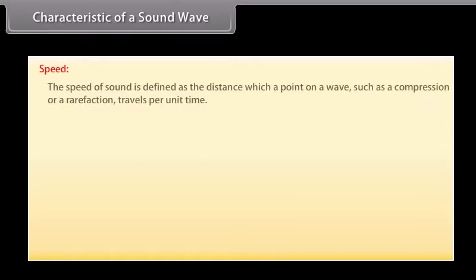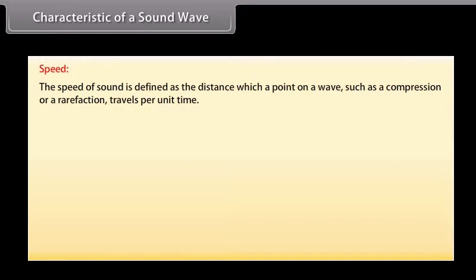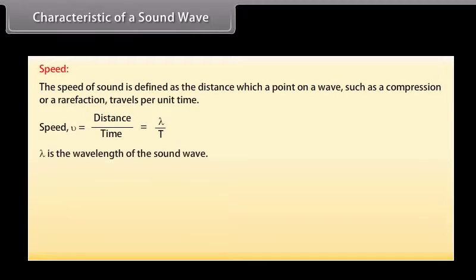Speed: The speed of sound is defined as the distance with which a point on a wave, such as a compression or a rarefaction, travels per unit time. We know that speed v is equal to distance upon time, which is equal to lambda upon T. Here lambda is the wavelength of the sound wave. It is the distance traveled by the sound wave in one time period of the wave. Thus, v is equal to lambda into nu. That is, speed is equal to wavelength into frequency.